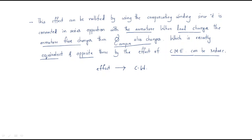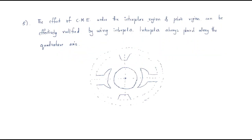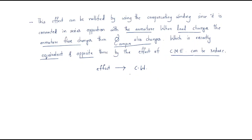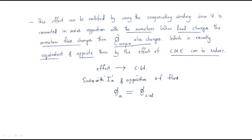The compensating winding is connected in series with the armature current and in opposition of the flux. Therefore, the flux due to the armature and the flux due to the compensating winding are both cancelled, since they are exactly opposite and equal. As a result, the cross-magnetizing effect (CME) can be reduced.